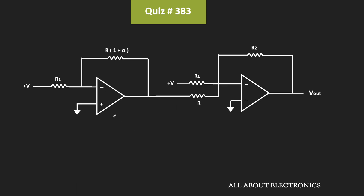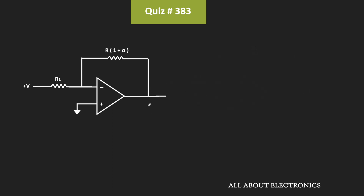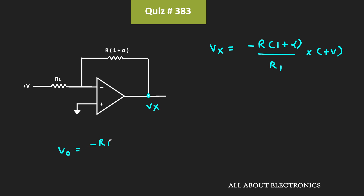The first op-amp is configured in the inverting configuration, and the output of the first op-amp is connected to the second op-amp via this resistor R. Let's say the output of the first op-amp is equal to Vx. This voltage Vx is equal to minus R times (1 plus alpha) divided by R1 times plus V volts. We know that in the inverting configuration, the output of the op-amp is given as minus Rf divided by R1 times the input voltage, and using that same equation we have written this expression.